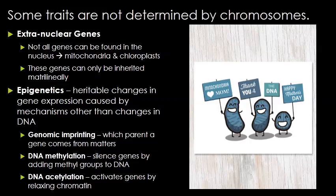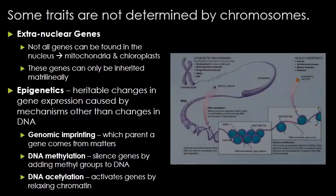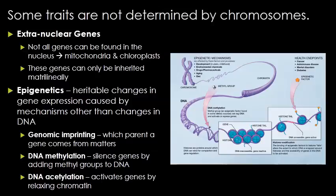Another thing Mendel never knew is that some traits are not determined by chromosomes. Some genes are not in your nucleus or part of your chromosomes — for us, that would be the mitochondria. Those genes are inherited matrilineally: you only get mitochondria from your mother, so she has an effect on those genes. Another example is epigenetics — a new field in genetics of major importance — which involves heritable changes in gene expression caused by mechanisms other than changes in the DNA. There are three major branches of epigenetics, with many more being discovered over time.